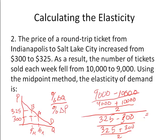If you calculate all that together, you get negative 1.32. The negative sign just means it's a downward sloping demand curve. A lot of times people will take the absolute value and just take 1.32 as the elasticity of demand. Either way, the elasticity is 1.32.